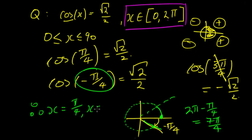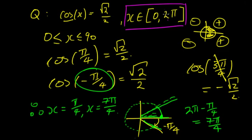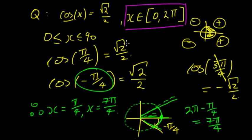Therefore x = π/4 and x = 7π/4 are the two solutions. There are no x values below π/4 or above 7π/4 within [0, 2π] that satisfy this. Always be mindful of the domain: check that all solutions are within it, and convert any out-of-range values like negative angles into equivalent positive ones.